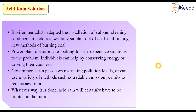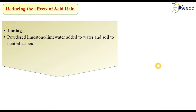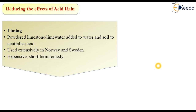Whatever way it is done, acid rain will certainly have to be limited in the future. Preventive measures include using other sources of electricity such as nuclear power, hydroelectricity, wind energy, geothermal energy, and solar energy as replacements for fossil fuel-based electricity generation. One method of reducing acid rain effects is liming — powdered limestone or lime water is added to water and soil to neutralize the acid. This method is used extensively in Norway and Sweden, though it is expensive and provides only short-term remedies.